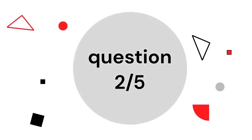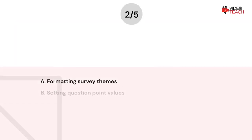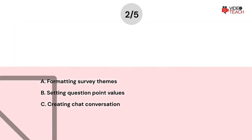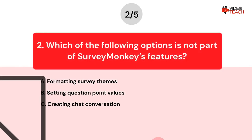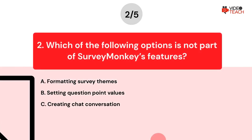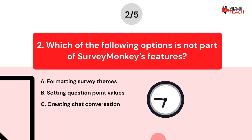Question number two. Which of the following options is not part of SurveyMonkey's features? Option A: Formatting survey themes. Option B: Setting question point values. Option C: Creating chat conversations. Now you have about 15 seconds to think about your answer.